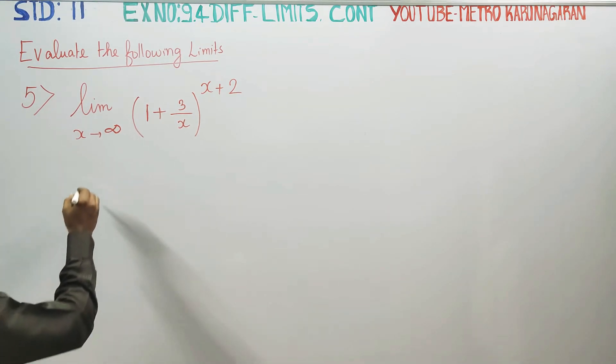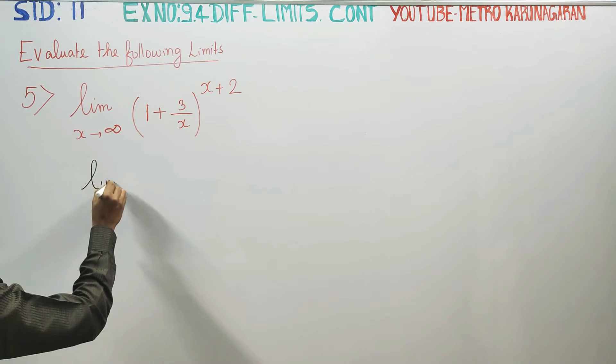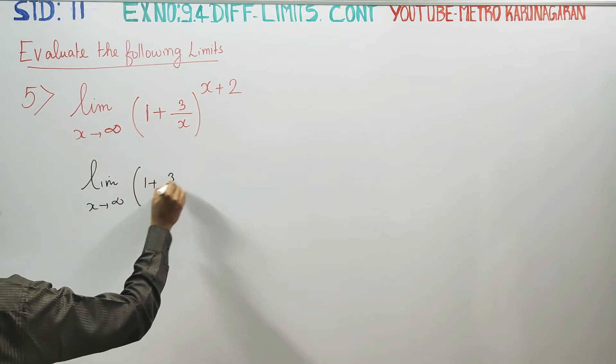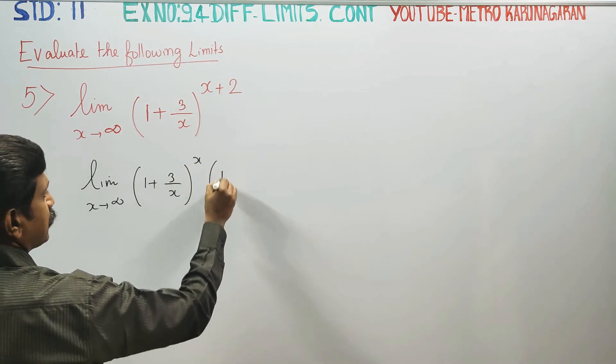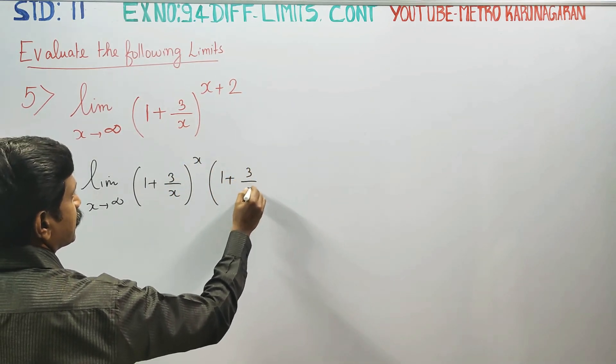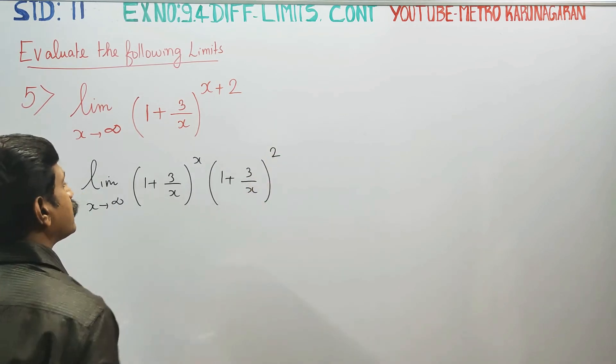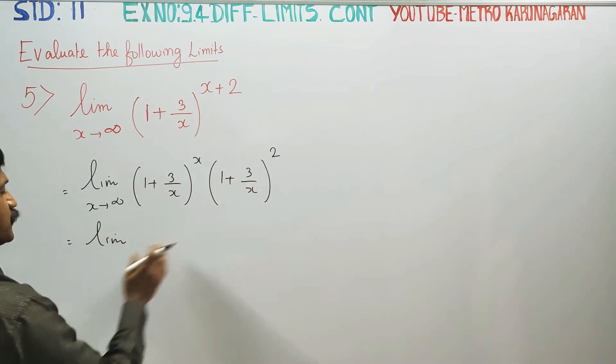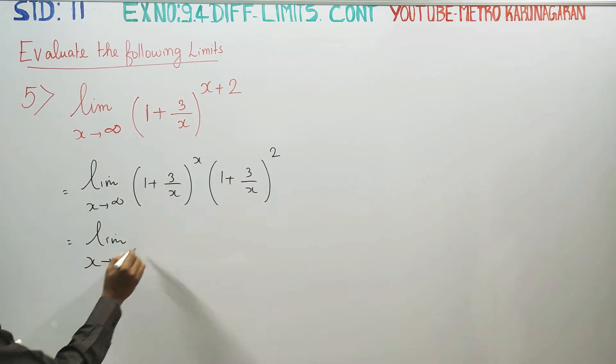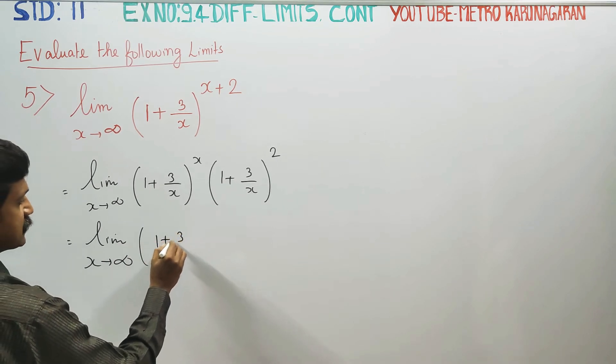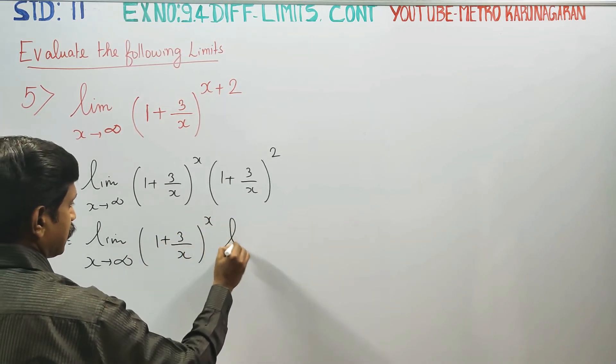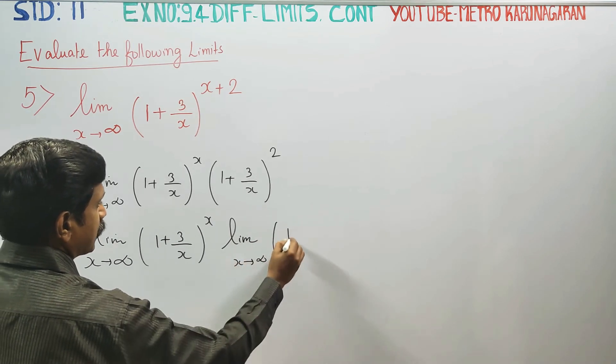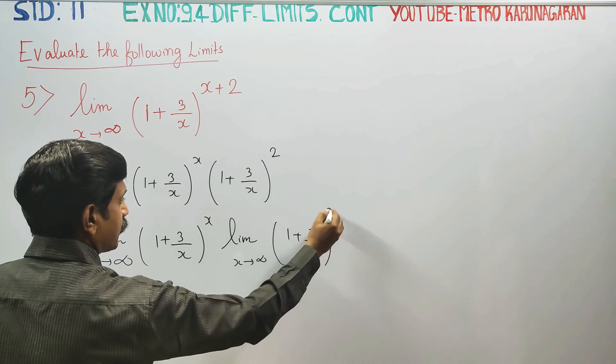Stage 1: limit x turns to infinity. This can be written as (1 + 3/x)^x times (1 + 3/x)^2. We separate this into the product of two limits: limit x turns to infinity of (1 + 3/x)^x, times limit x turns to infinity of (1 + 3/x)^2.